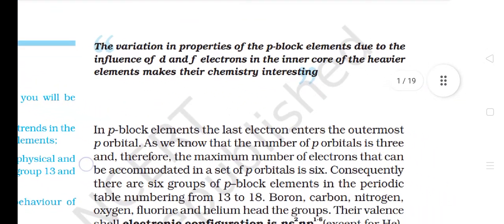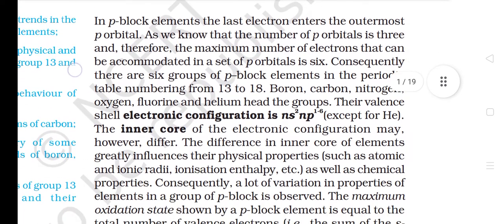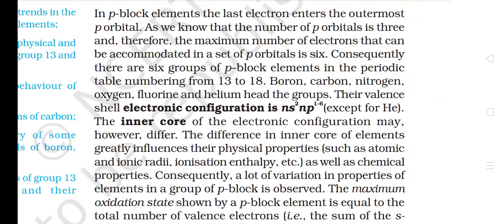The variation in properties of the P-Block elements due to the influence of D and F electrons in the inner core of the heavier elements makes their chemistry interesting. In P-Block elements, the last electron enters the outermost P orbital. As the number of P orbitals is 3, the maximum number of electrons that can be accumulated in a set of P orbitals is 6. Consequently, there are 6 groups of P-Block elements in the periodic table, numbering from 13 to 18.